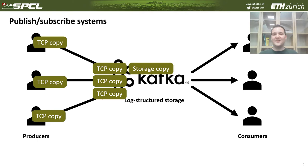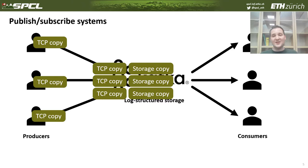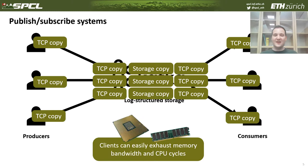In addition, Apache Kafka has to copy these records from the receive buffers and store them into storage. And when a record has to be sent, it again involves the TCP stack. As you can see, clients can easily exhaust the memory and CPU resources of Apache Kafka.